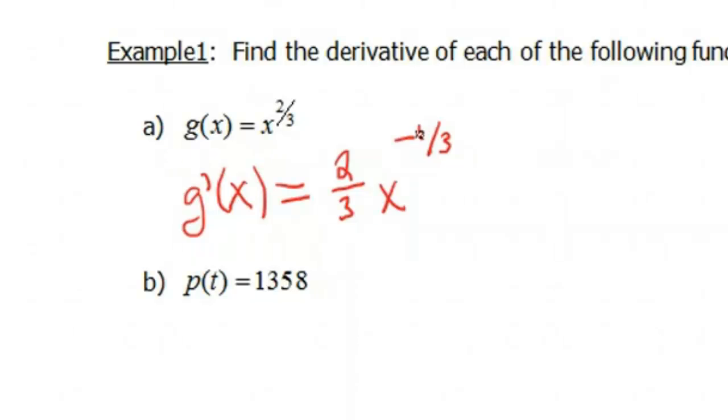Because remember, 2/3 minus 1 is the same thing as 3/3. So 2/3 minus 3/3 gives us negative 1/3. Now there's many different ways you can write this notation, but that depends on your instructor and what they expect of you. I'm just gonna leave it as this equation and you can simplify from there if necessary.